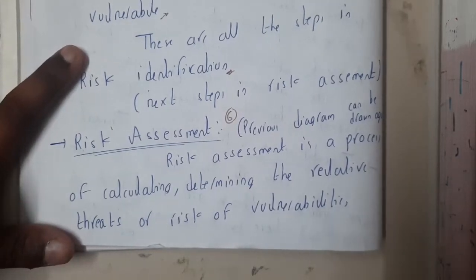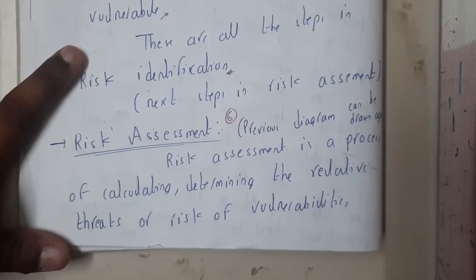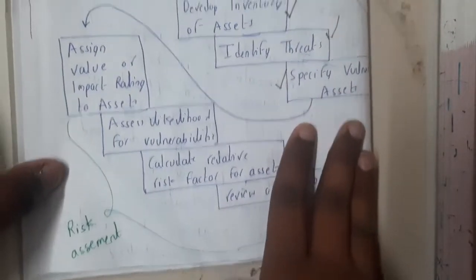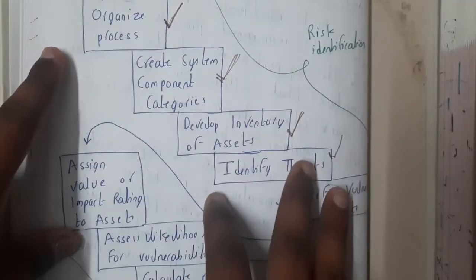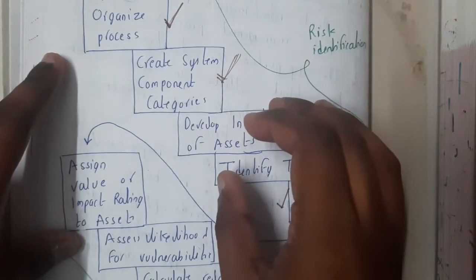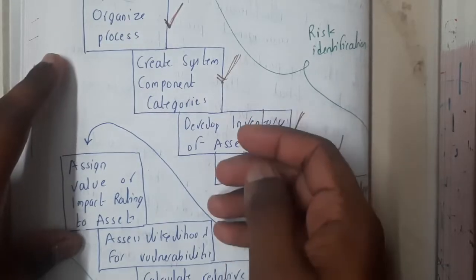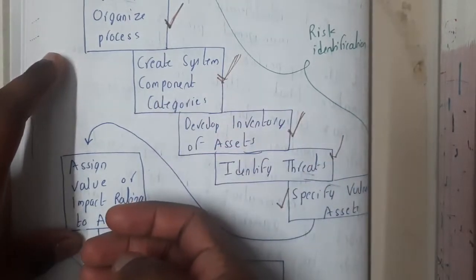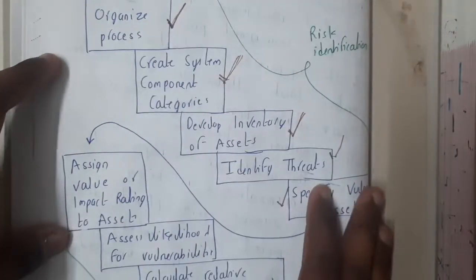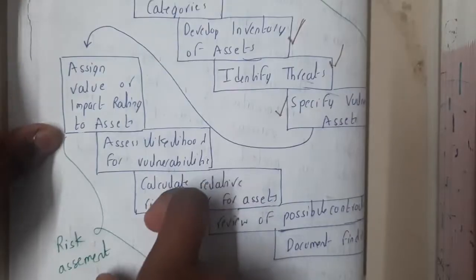Hello guys, we are back with our next lecture. In this lecture let us go through the concept of risk assessment. In our last lecture we discussed about risk identification, and in that I discussed the diagram for risk assessment. Whenever a question is given, please draw the full diagram because risk management or risk identification cannot be done without identifying the assets. It is a step-by-step process, so it is better to draw the full diagram even if the question is asking about risk identification or risk management.